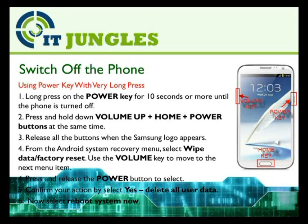From the Android system recovery menu, select 'Wipe data / Factory reset.' You can use the volume key to move up and down on the menu items. Press and release the power button to select. Now confirm your action by selecting 'Yes — delete all user data.' And finally, select 'Reboot system now.'